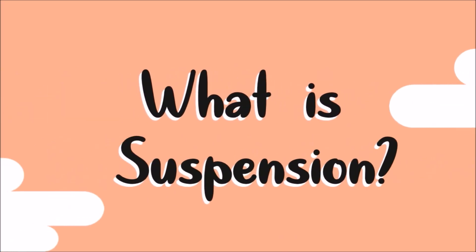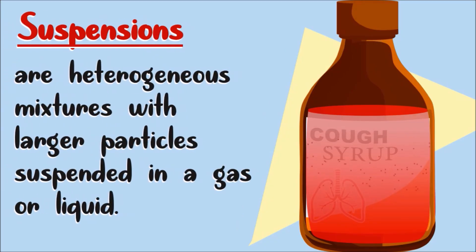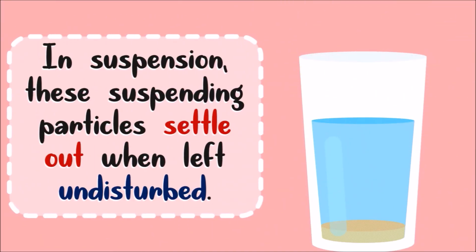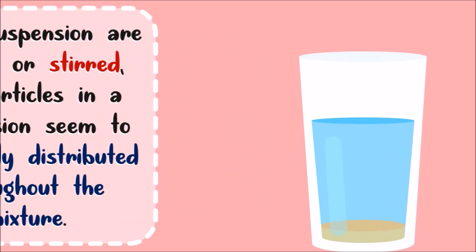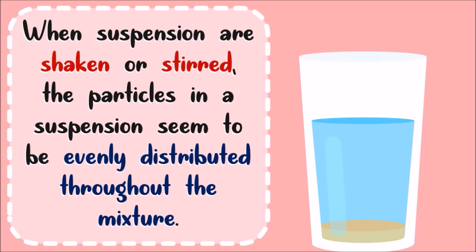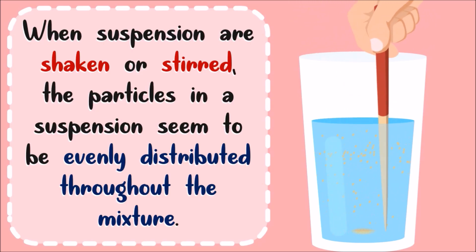What is suspension? Suspensions are heterogeneous mixtures with larger particles suspended in a gas or liquid. In suspension, these suspending particles settle out when left undisturbed. And when shaken or stirred, the particles in a suspension seem to be evenly distributed throughout the mixture.